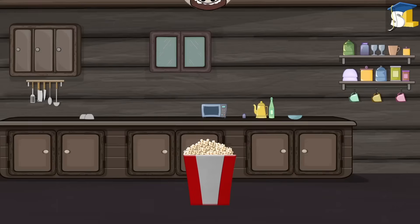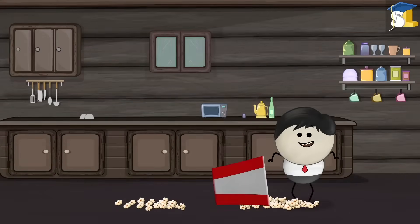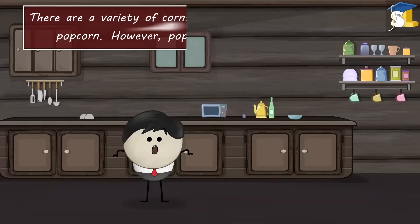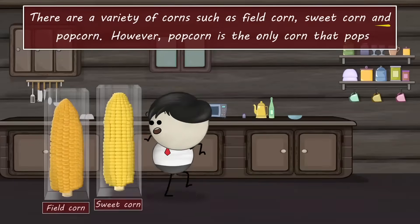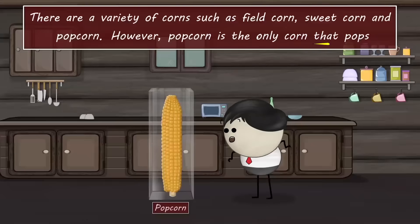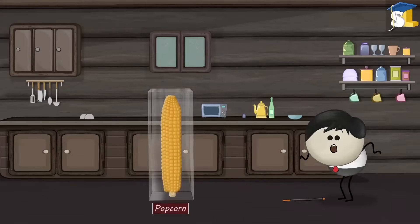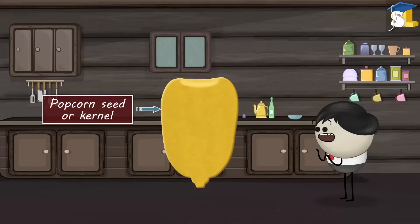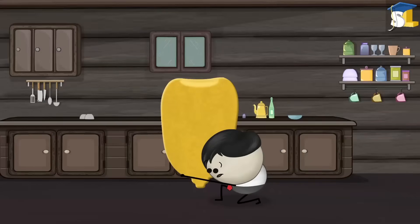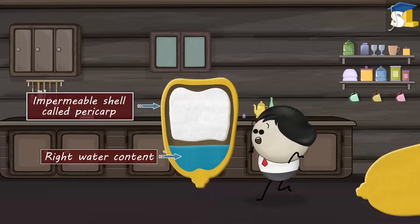Pressure. Why does popcorn pop? Because popcorn is a pop dancer. No. There are a variety of corns such as field corn, sweet corn and popcorn. However, popcorn is the only corn that pops. Why? Does it have some magical powers? No. There are three things in a popcorn seed or kernel that work together to form a perfect popcorn. Those are an impermeable shell called pericarp, right water content and starch.